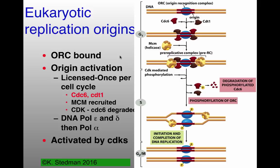These multiple origins of replication are bound by the origin recognition complex, or ORC. In its unphosphorylated state, the ORC can interact with CDC6 and CDT1. Once these have interacted, the replicative helicase — the MCM protein together with the GINS protein — will associate with this pre-replicative complex. This is present at the end of G1 phase. As there is the transition from G1 to S phase, cyclin-dependent kinases phosphorylate CDC6 and ORC, activating the MCM helicase.